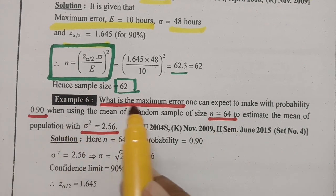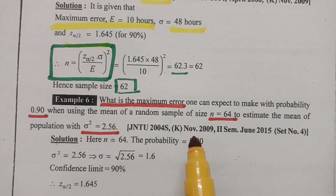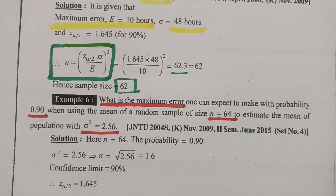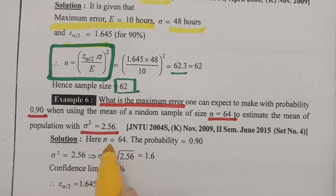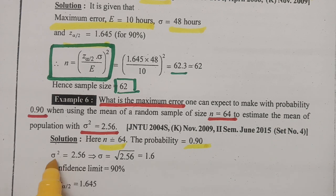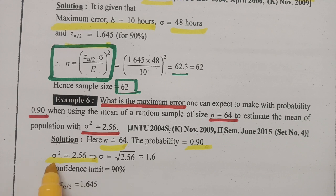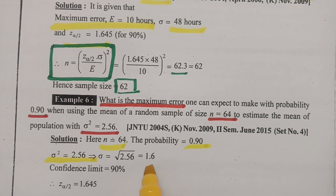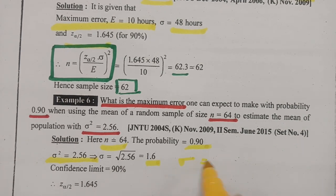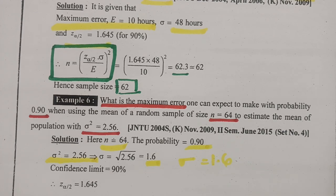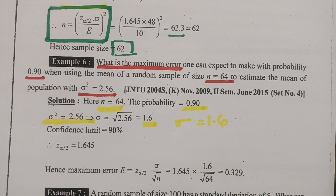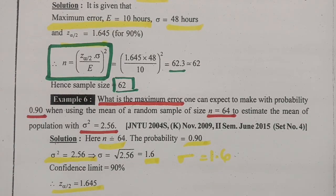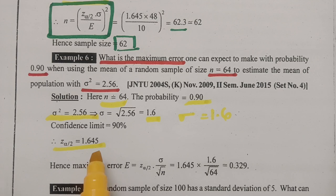First of all, we underline all the numerals. Sigma square — the variance — is given as 2.56, and sigma — the standard deviation — is equal to the square root of 2.56, which equals 1.6. Therefore sigma is equal to 1.6. And Z alpha by 2 for 90% confidence is 1.645.